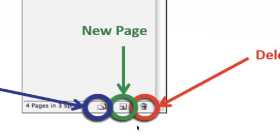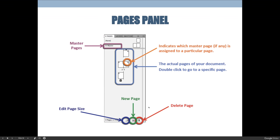The second button from the right looks like a little piece of paper with the corner turned up. Whenever you see that icon in Adobe software it means 'new.' Because it's on the Pages panel it means a new page; on the Layers panel it would mean a new layer; on the Swatches panel a new color swatch. If you select that icon it's like choosing 'add page' — whatever page you have selected, it will add one new page after it. You can hit it multiple times but you're adding one page at a time.